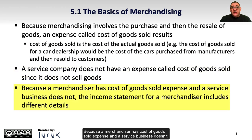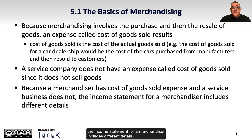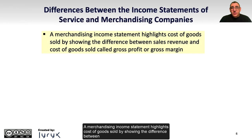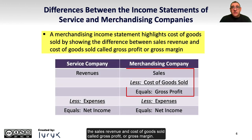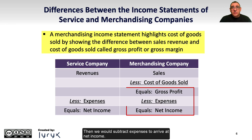Because a merchandiser has cost of goods sold expense and a service business doesn't, the income statement for a merchandiser includes different details. A merchandising income statement highlights cost of goods sold by showing the difference between the sales revenue and cost of goods sold, called gross profit or gross margin. Then we would subtract expenses to arrive at net income.